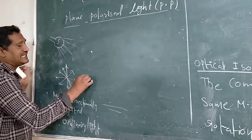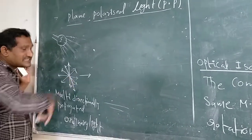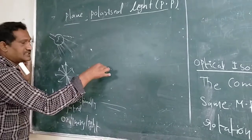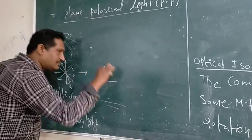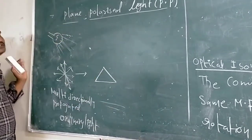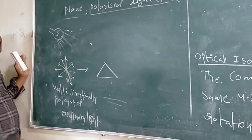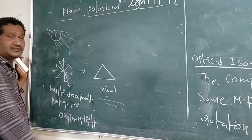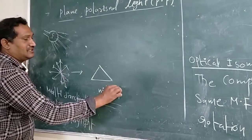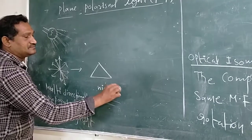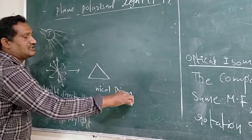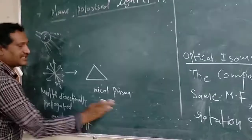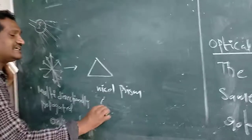When this multidirectional ordinary light is passed through the Nicol prism — this is also simply called a prism — the direction of light changes. The Nicol prism is made by calcite.